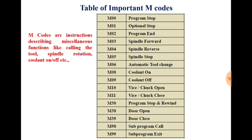Here you can see the list of M codes, and we will now discuss each one in detail. The very first M code is M00, and its use is program stop. M00 is used for stopping the program. Suppose you want to stop your program somewhere — that time you can use the code M00.